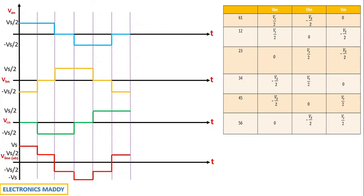You might ask where the AC output waveform is, since this looks like a square wave. If you observe carefully, it resembles a sine wave — this is a square wave inverter output. We use filters at the output terminals to convert the square wave into a proper sine wave. Also note the 120 degree phase shift between Van, Vbn, and Vcn, which is the expected characteristic of three-phase AC output.